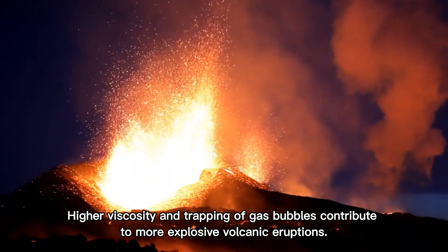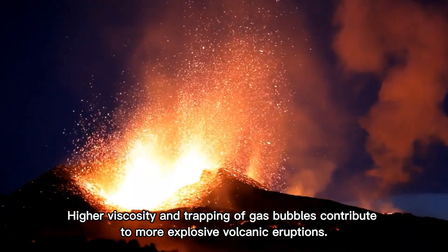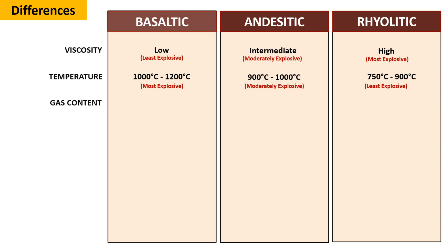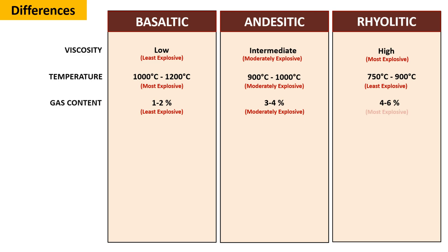And even though it releases fewer gases, the trapped bubbles make eruptions more explosive. In summary, higher viscosity and trapping of gas bubbles contribute to more explosive volcanic eruptions. The gas content of basaltic magma is 1–2%, andesitic magma is 3–4%, and rhyolitic magma is 4–6%. Since basaltic magma has the lowest gas content, it is the least explosive. Andesitic magma with an average gas content is moderately explosive, while rhyolitic magma with the highest gas content is the most explosive.